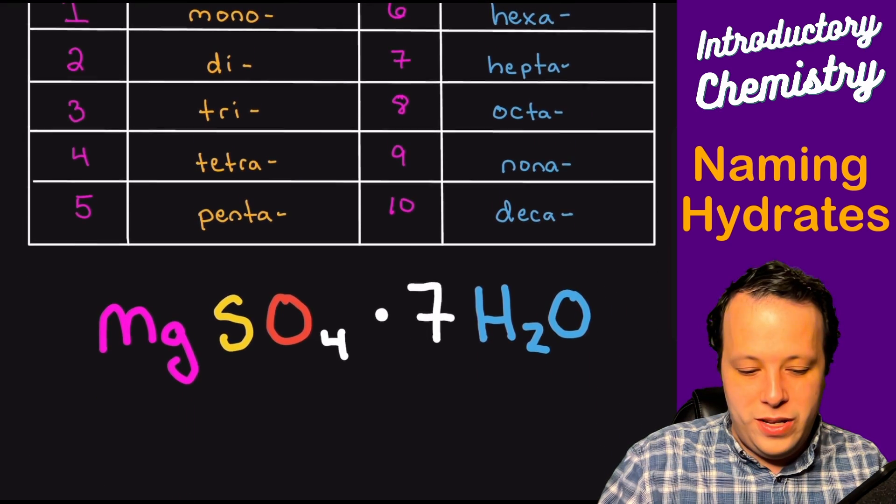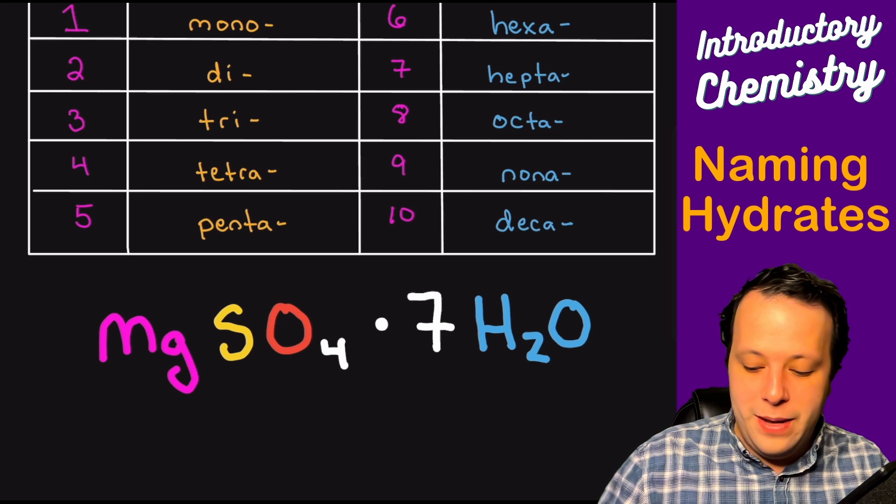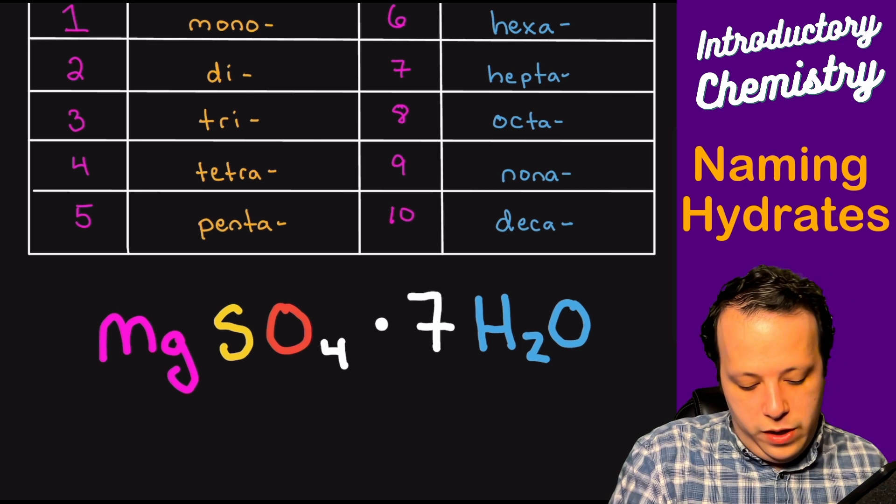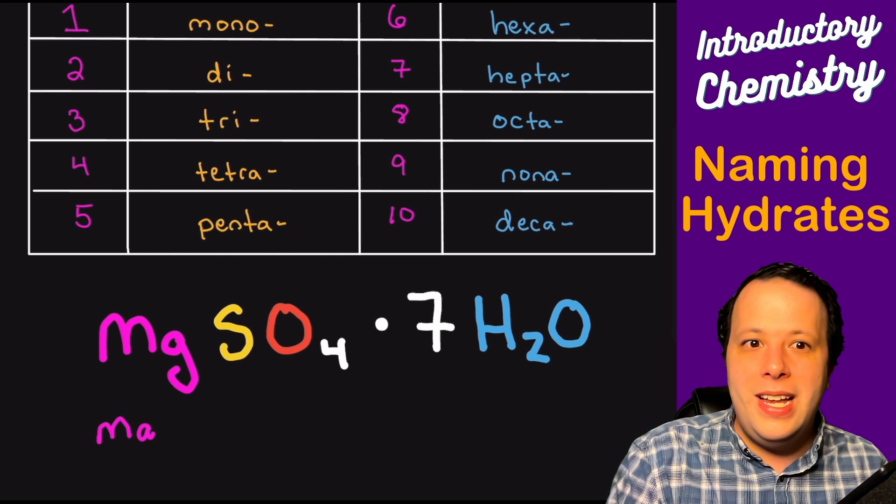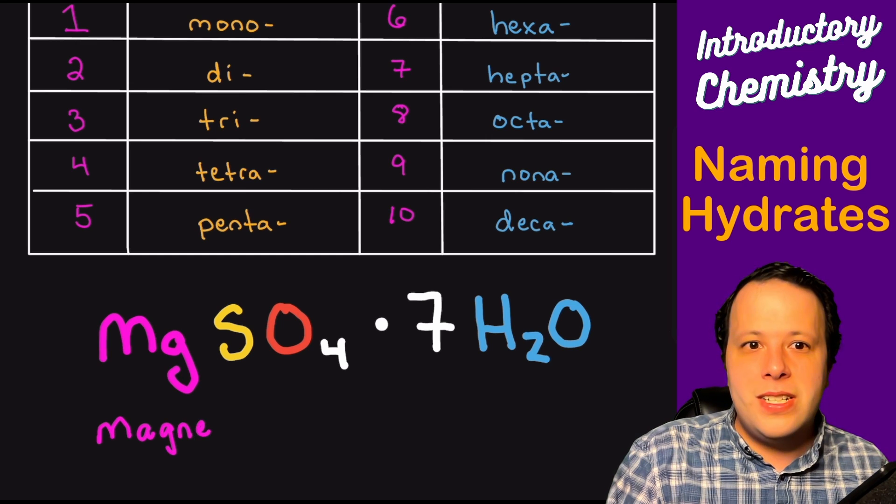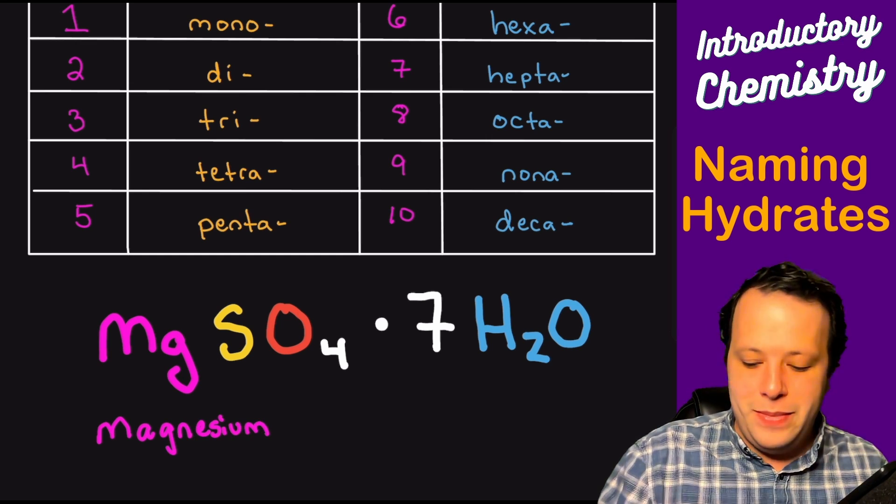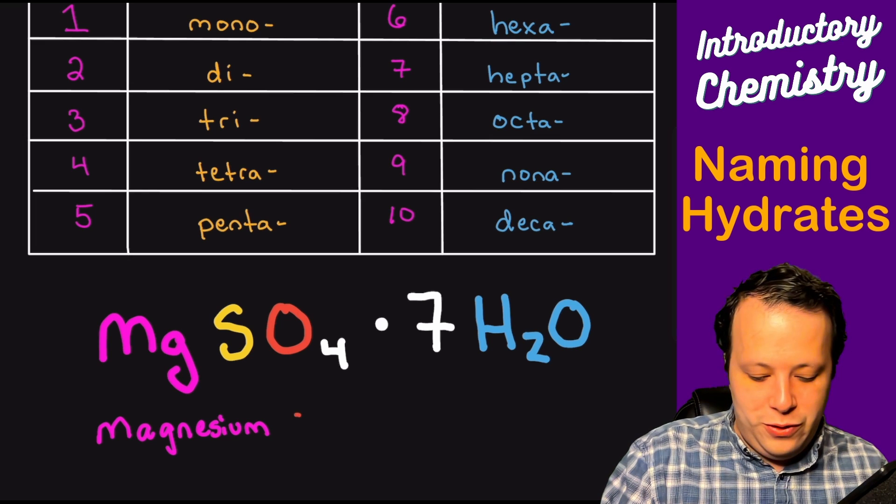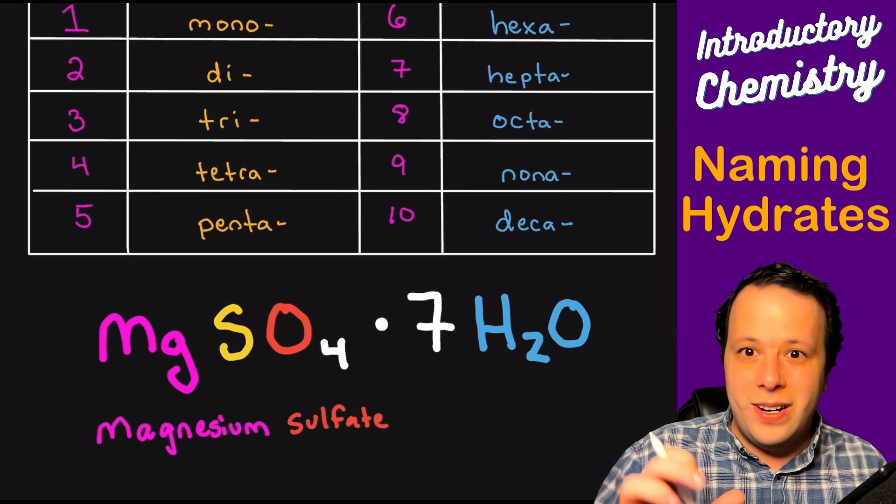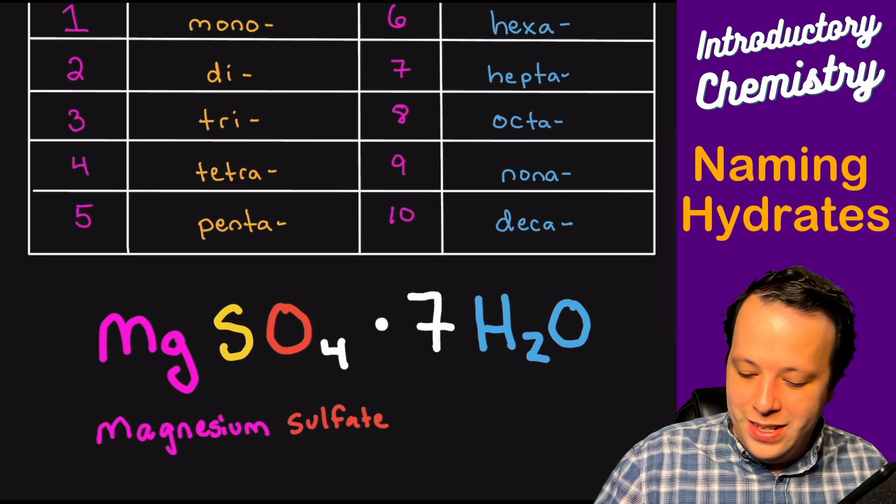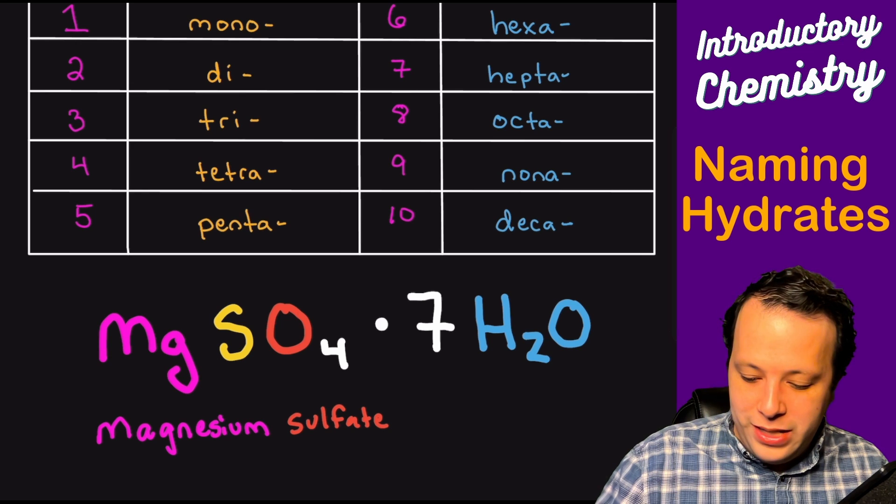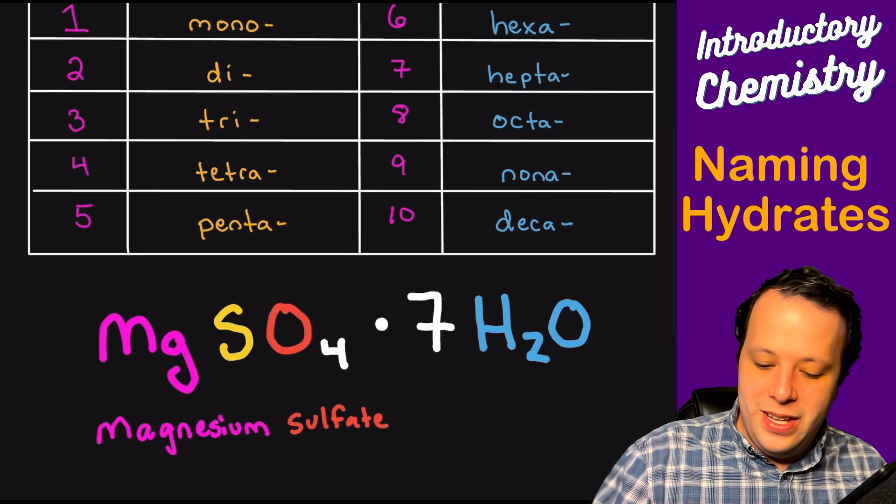So if we go back to the one that I had over here, which is MgSO4, well, we would go through and we would name it just like we would do for any ionic compound. So we have our magnesium, then we would name our sulfate portion of it. So we have our oxyanion species with our compound. And now we're going to use a prefix.